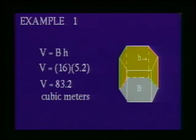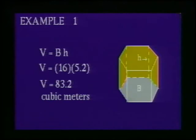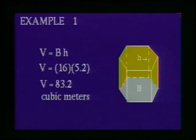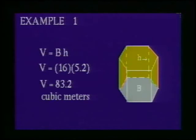Example 1: Find the volume of a hexagonal prism with the area of the base equal to 16 meters squared and a height of 5.2 meters. Since we have a prism, we will use the formula V = B × H, where capital B is the area of the base and H is the height. We are given that the area of the base is 16 meters squared and the height is 5.2 meters. Substituting these values into the formula and solving, we find the volume of this hexagonal prism is 83.2 cubic meters.